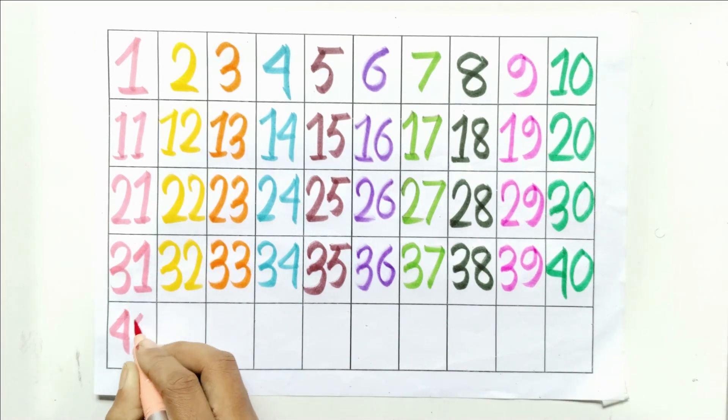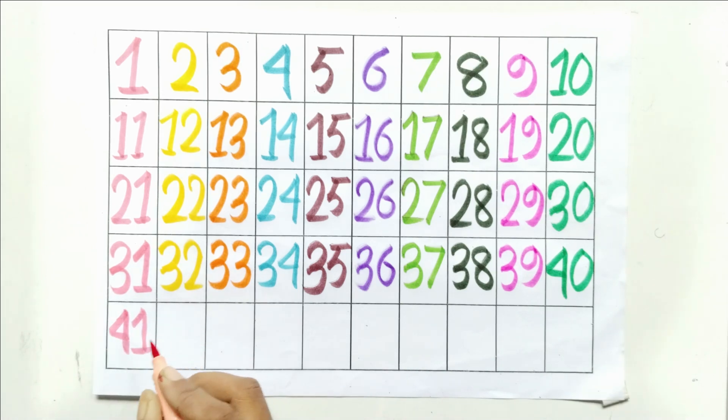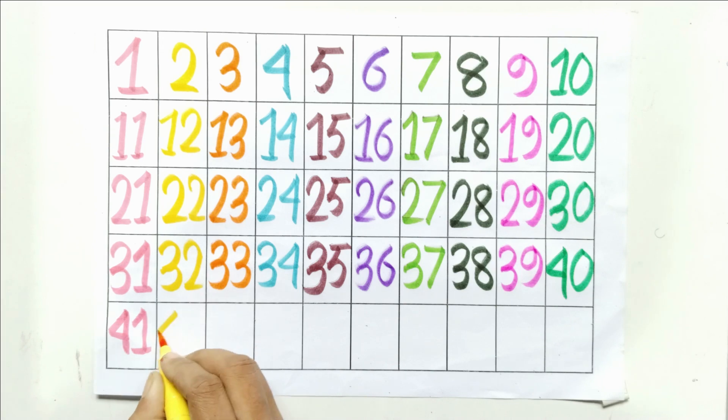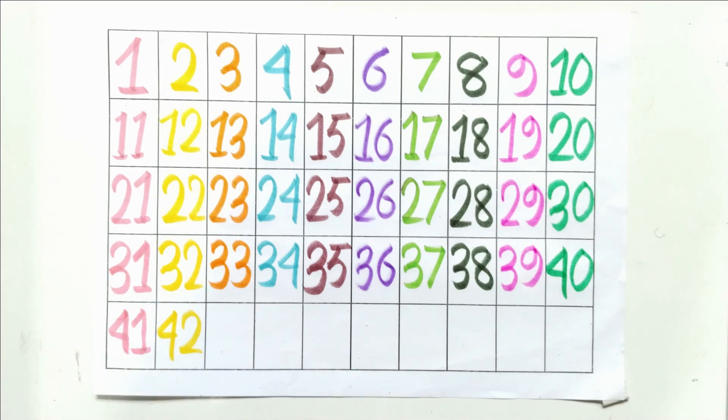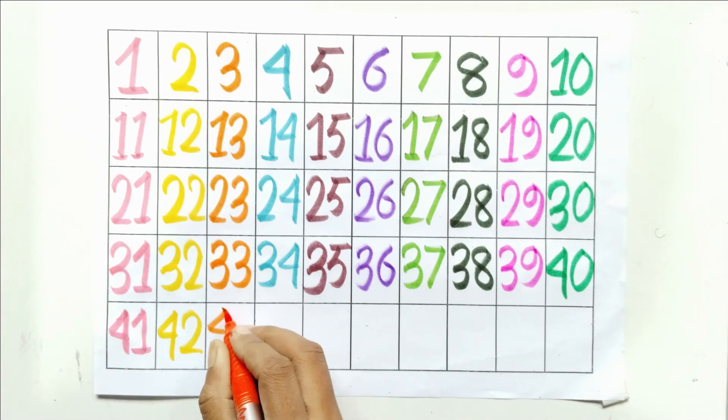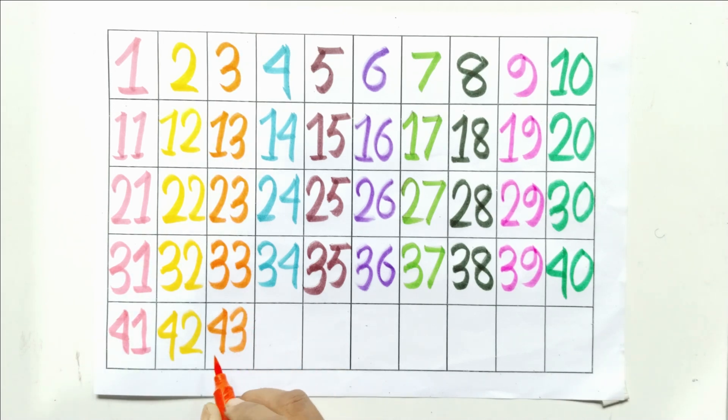Four and one, forty-one. Four and two, forty-two. Four and three, forty-three.